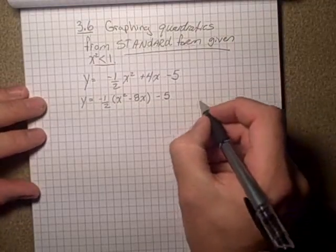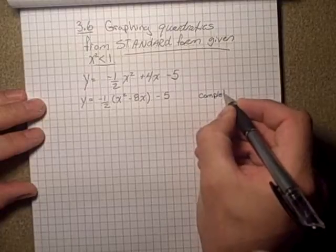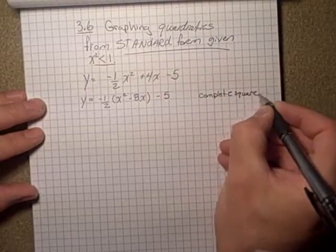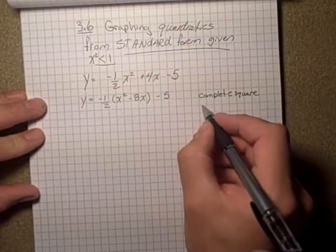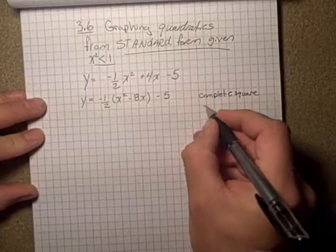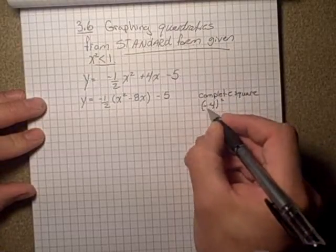And then complete the square in the brackets there. So half of negative 8 is negative 4 squared, so that is equal to 16. So I'm going to be combining 16 into that bracket part.